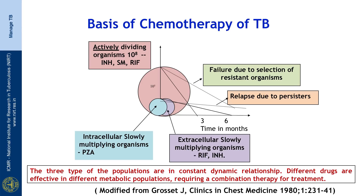Why is it important to know? Anti-TB drugs act only when a bacterium is dividing. So it is easier to kill the larger population which is actively dividing. The drugs most effective against this population are rifampicin, INH, and streptomycin — INH being the most potent.